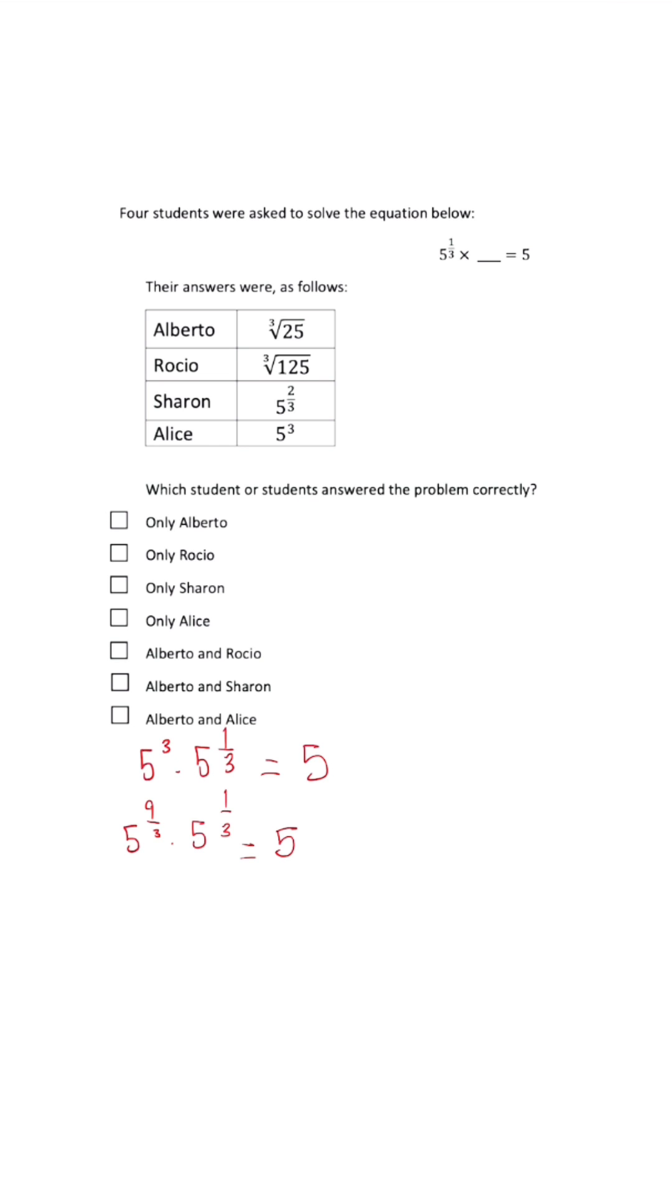When we go to the second answer choice, Sharon has 5 to the 2/3 times 5 to the 1/3 equals 5. When we add our exponents, we get 5 to the 3 over 3 power, which is basically 5 to the 1st power. So we know Sharon is correct. And because Sharon is correct,